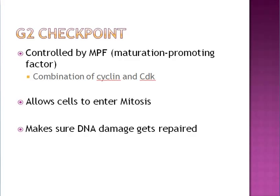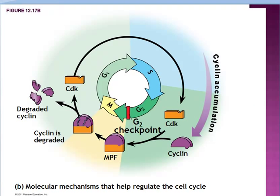In G2, it's a different set of proteins — maturation promoting factors — a combination of a cyclin and a cyclin-dependent kinase. This allows the cell to enter into mitosis and makes sure the DNA is not too damaged. This is basically a checkpoint to make sure the S phase did its job. Here's a quick picture of a cyclin and a CDK binding to form the maturation promoting factor that controls the G2 checkpoint.